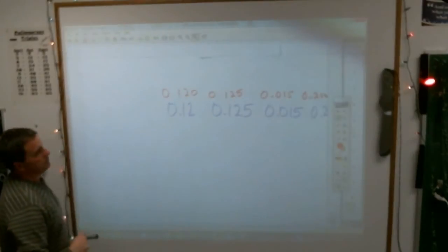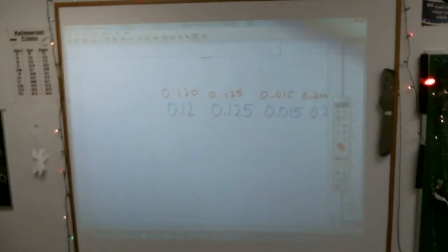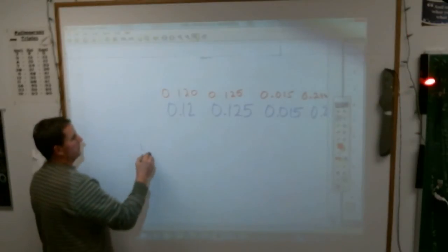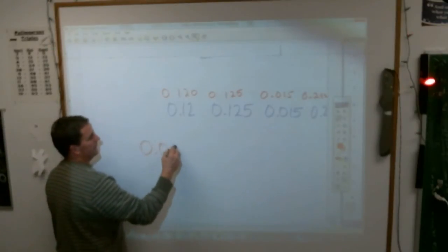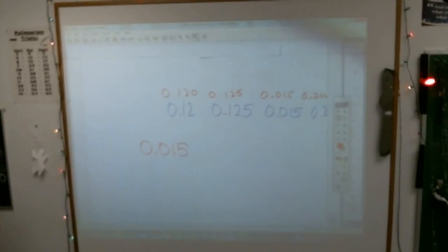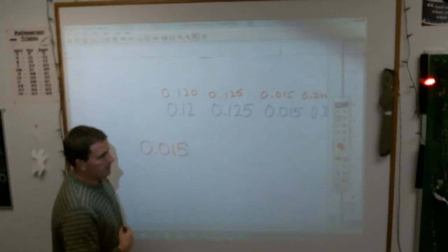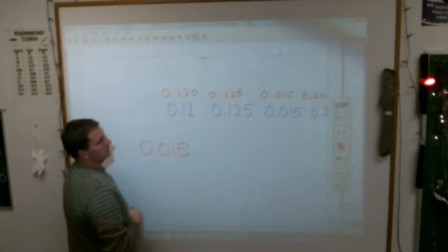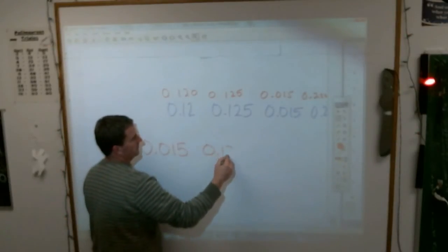Of those, which one is the smallest? 120, 125, 15, or 200. The smallest is 0.015. Right. After that, then the next biggest would be? 120, 125, or 200. Keith says 120, or 0.12 as it's written.